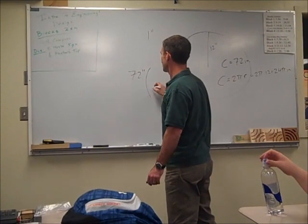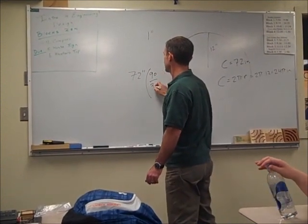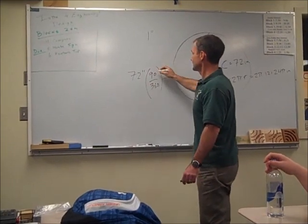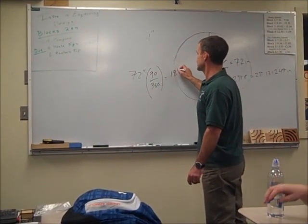How much? A quarter of it. 90 of 360. So I multiply it by the ratio of what I want over the total, and I get 18 inches.